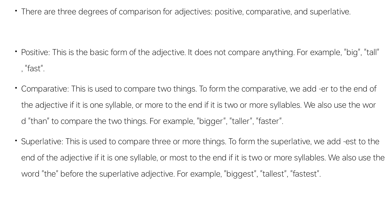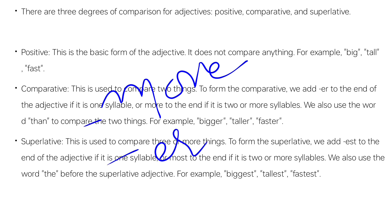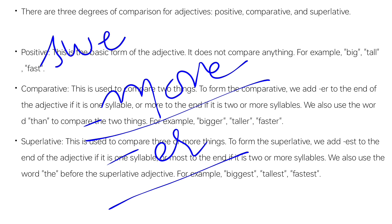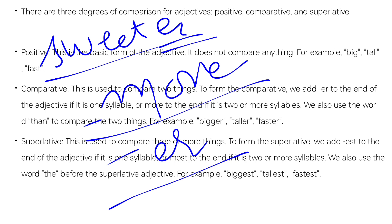In the Comparative form, we compare two people or things. We add -er to the end of the adjective. For example: sweet becomes sweeter, tall becomes taller, fast becomes faster, big becomes bigger. This is our Comparative form.